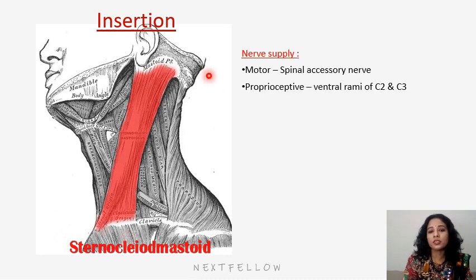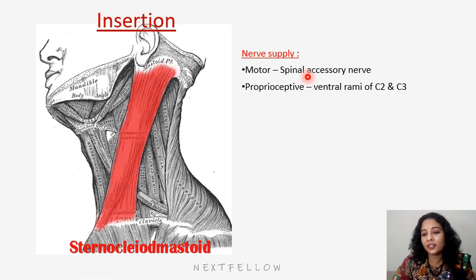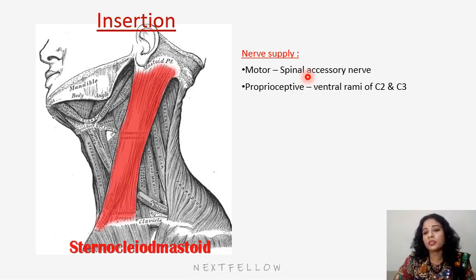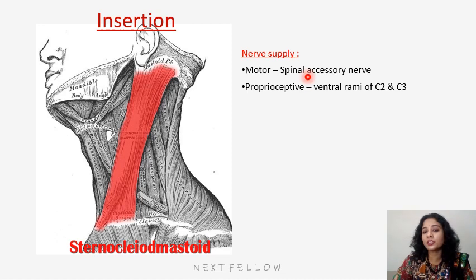The nerve supply to the sternocleidomastoid — motor supply — is by the spinal accessory nerve, the 11th cranial nerve, specifically its spinal part. Proprioceptive fibers, that is the position sense, are supplied by the ventral rami of C2 and C3 from the cervical plexus.